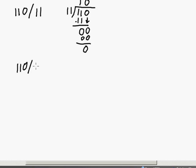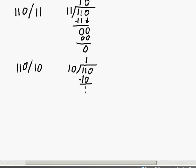The next example: 110 divided by 10. You can probably look ahead and see that all I've done is changed the denominator, so the answer is going to be 11, but let's go through the steps. 10 goes into 11 one time. One times 10 is 10. Do the subtraction: 11 minus 10 is 1. We bring down the zero, giving us 10. 10 into 10 goes one time. One times 10 is 10. Do the subtraction and we have a remainder of zero. So 110 divided by 10 is equal to 11.